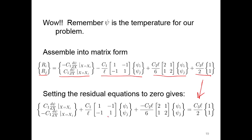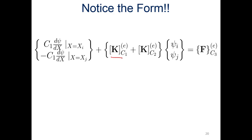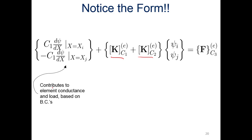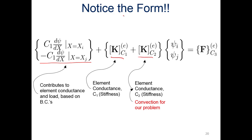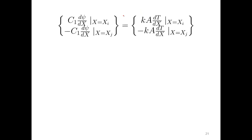Looking back one slide, notice what we have here — this equation looks familiar. We have these two terms which look like stiffness matrices. Over here, this contributes to the element conductance and load based on the boundary conditions — that's the second-order term, which makes sense: it contributes to the conductance. This is the element conductance, or you can think of it as a stiffness matrix. This is also an element conductance, but in this particular problem it's the convection term. And finally, we have a thermal loading — just as we had a load matrix due to force in structural analysis, in thermal analysis it's a thermal load.